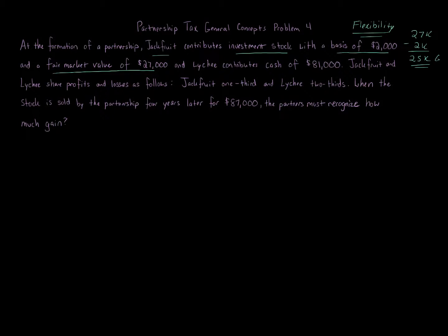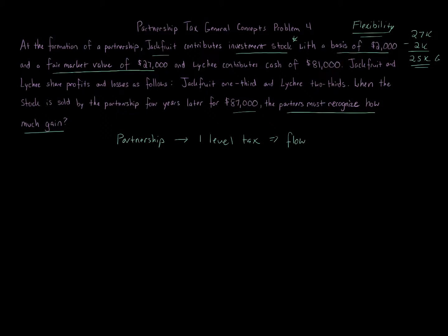The question asks: if the partnership sells the investment stock for eighty-seven thousand dollars four years later, how much gain must the partners recognize? Remember, a partnership is a flow-through entity — there's only one level of tax, and items flow through to the owners just like an S corporation. Everything reported in the partnership flows through as a conduit to the owners, Jackfruit and Lychee, based on how items are allocated.